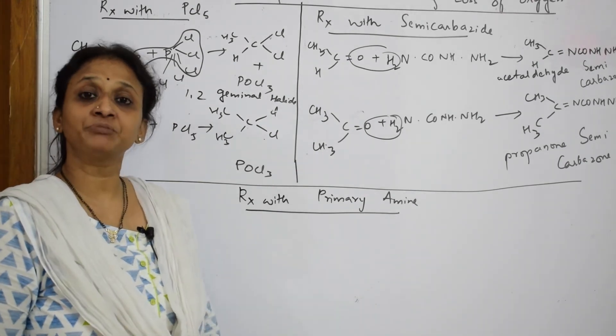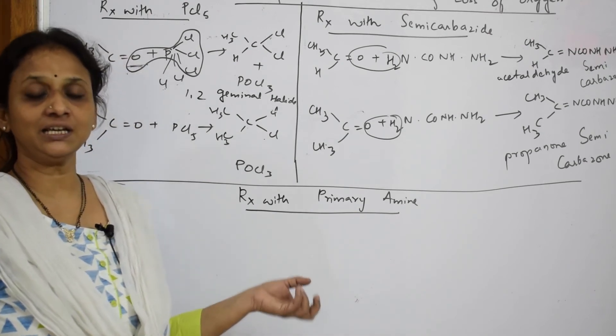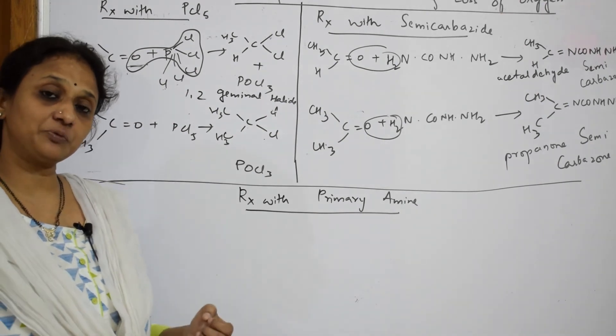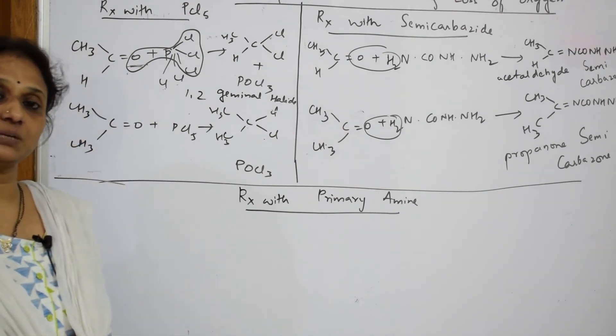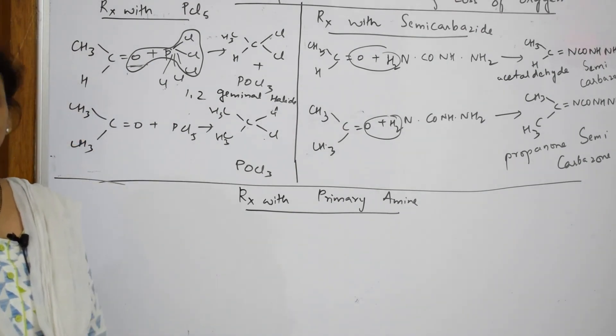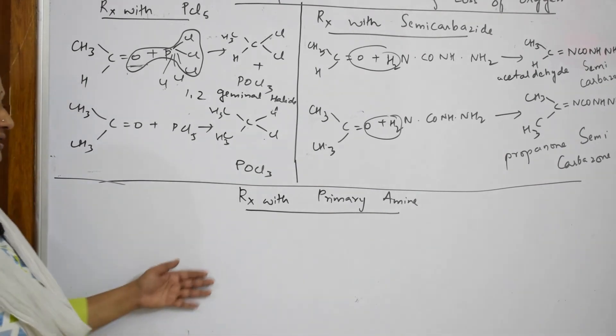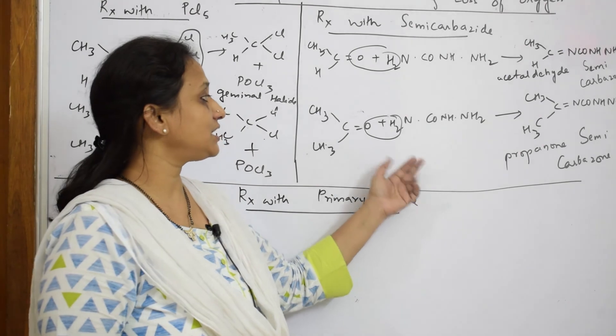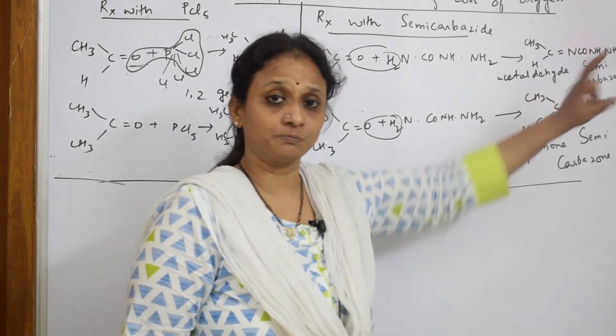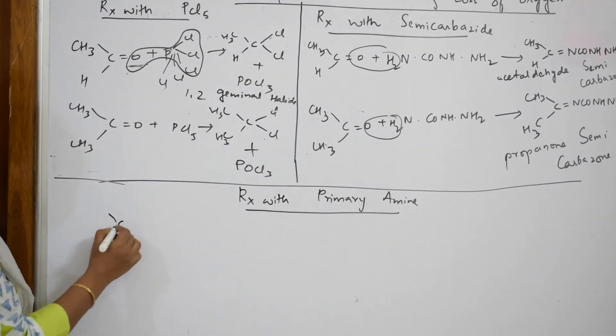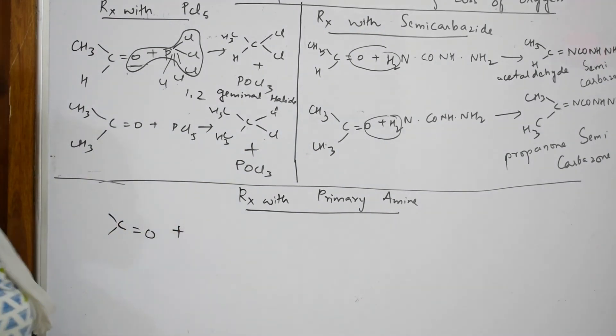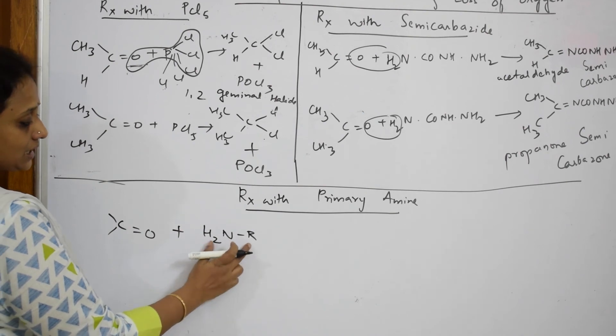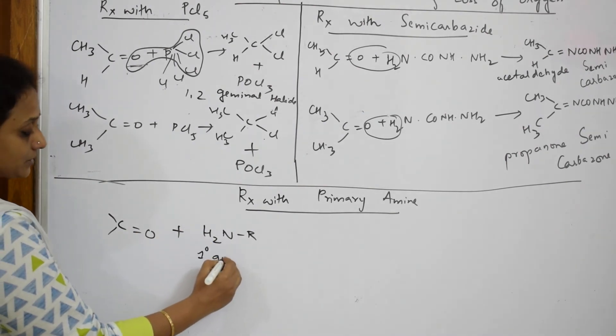Now like that, there is one more test where we are going to prepare Schiff's base. What is this test used for? Basically, aldehydes and ketones also react with Schiff's, means with primary amine. But your aldehyde will respond faster with Schiff's reagent. That Schiff's reagent gives a magenta pink color if an aldehyde is present in that particular organic compound. So let us see primary amine.